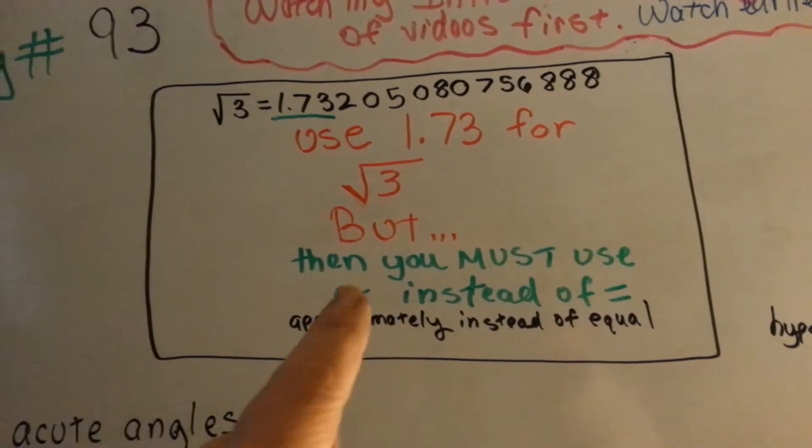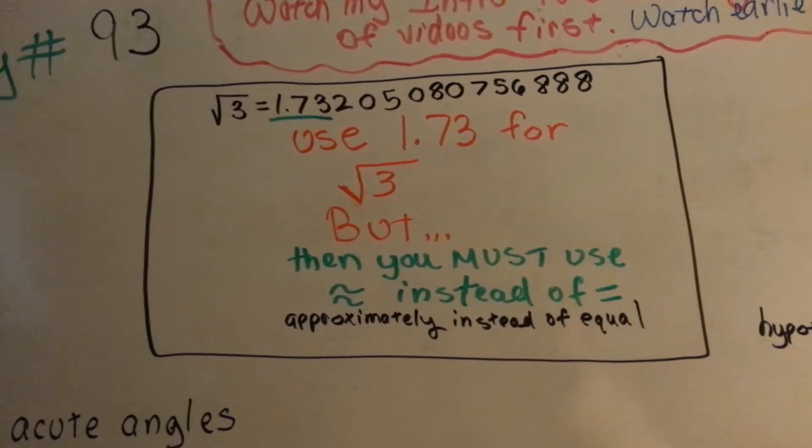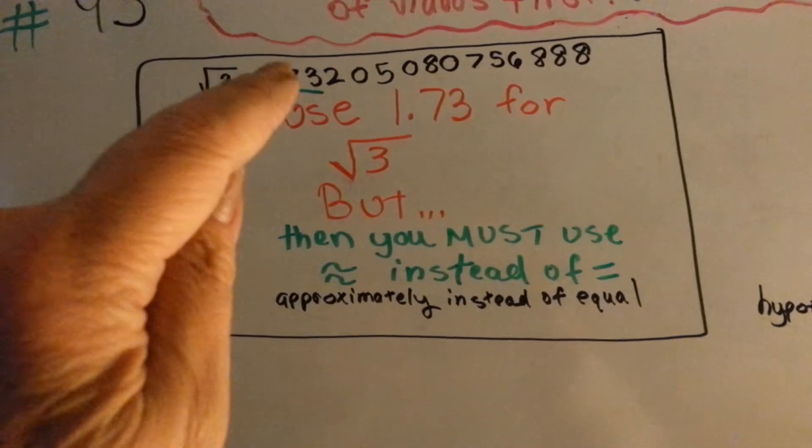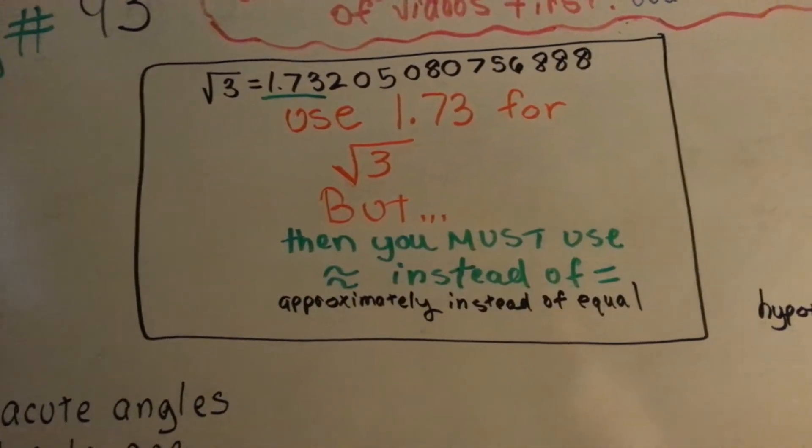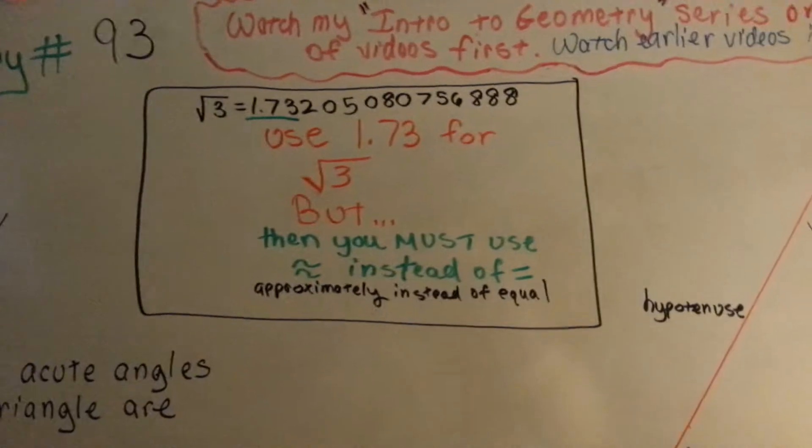But you must remember to use the approximate sign. If you use the equal sign, you will be wrong, because this is a rounded number. It would be a completely different number if you plugged all of those in, and it would be kind of silly for you to do that to every single math problem.